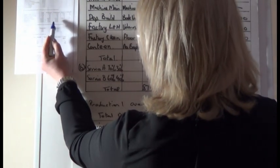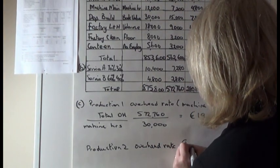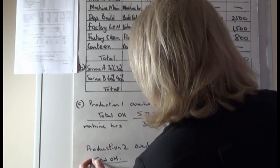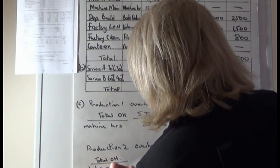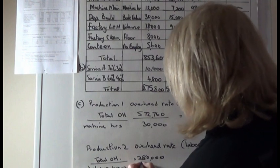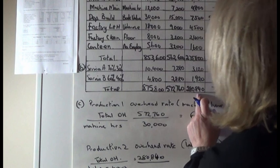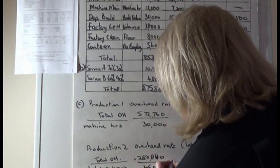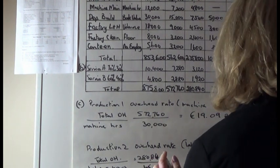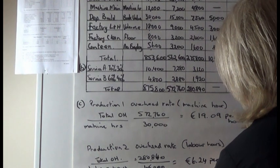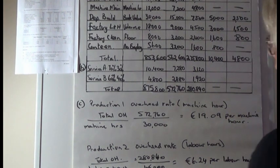For Production 2, labour hours are much higher than machine hours, so we use the labour hour rate. Total overheads for Production 2 from Part B — 280,840 — divided by labour hours of 45,000 gives an absorption rate of 6.24 per labour hour. That completes Part C.